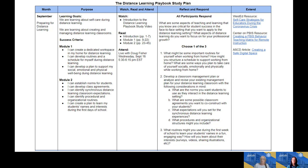In the Extend column — column five — for September we have three resources offered: a WestEd resource on self-care during distance learning, a PBIS resource with a teaching matrix with strategies for remote instruction, and an ASCD article on creating a safe digital space. These extension resources are optional if you want to go deeper. And keep in mind: if you don't have time to read all the assignments prior to the synchronous meetings, we still want you to participate and join those meetings, because you can still contribute and we'll all get something out of our discussions and collaboration.